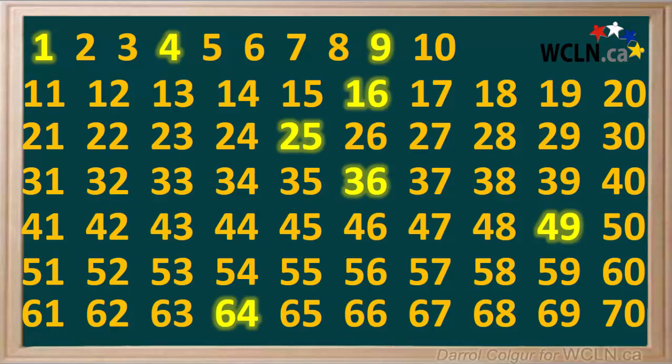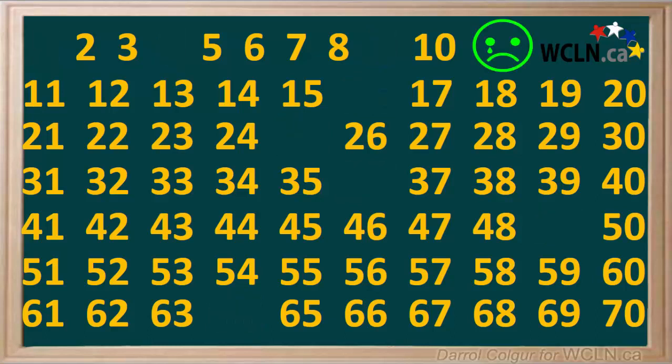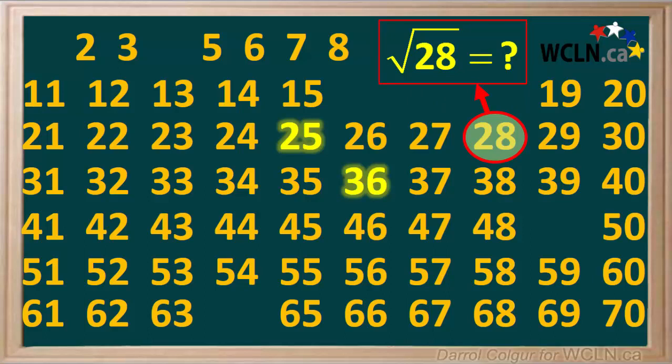At this point, you have probably learned some methods of finding the square root of a perfect square. But what about all the whole numbers that are not perfect squares? We might also want to find the square roots of these. It turns out that for whole numbers that are not perfect squares, we can only get an approximation of their square roots. For example, let's say we wanted to find the square root of 28, which is not a perfect square.